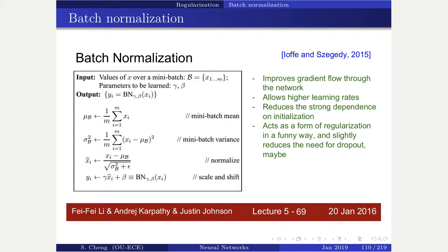After normalization, we also apply a learnable rescaling step: multiply by a parameter gamma and add a bias beta. These parameters are trainable. If the normalization turns out to be unnecessary, the network can learn gamma and beta to exactly undo it. That's essentially what batch normalization does.